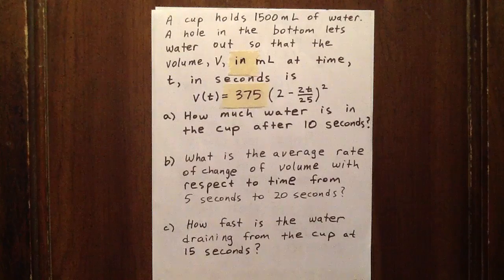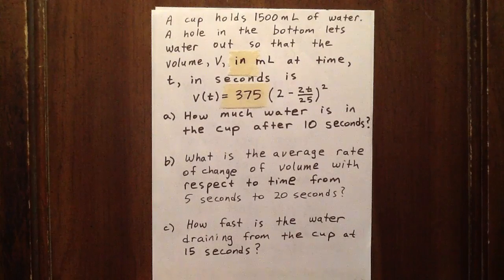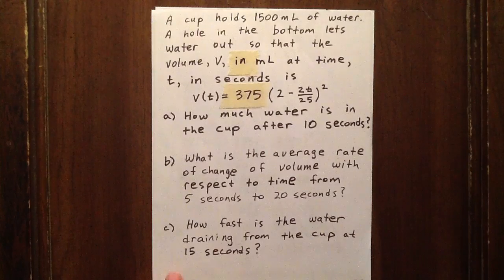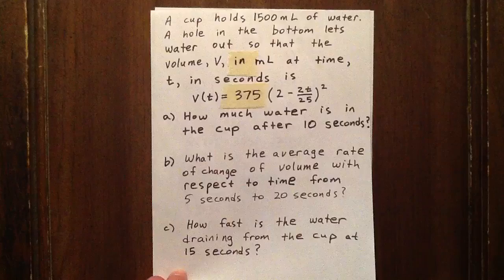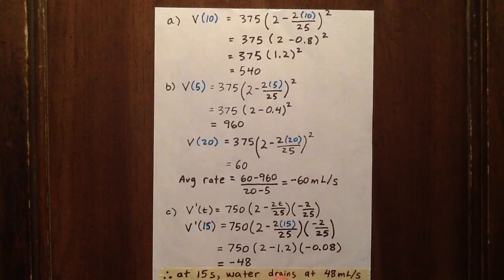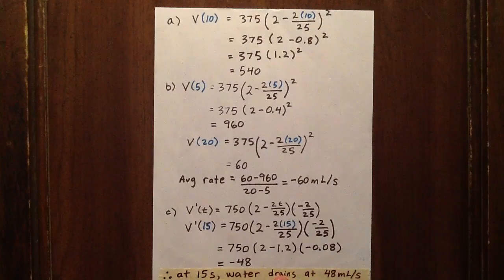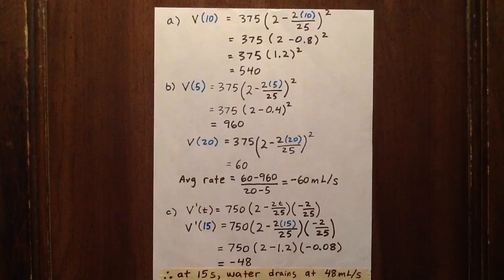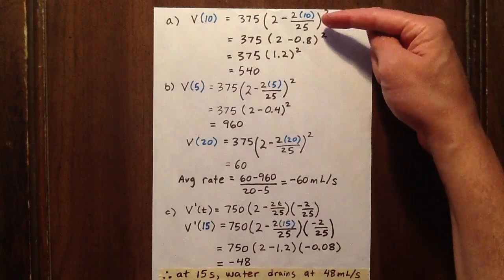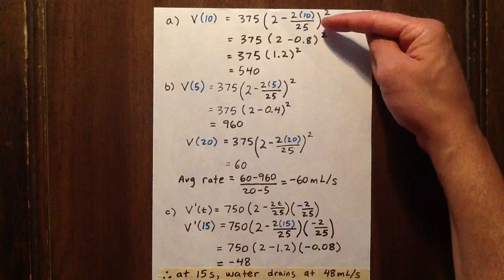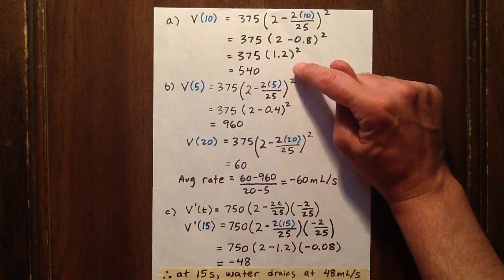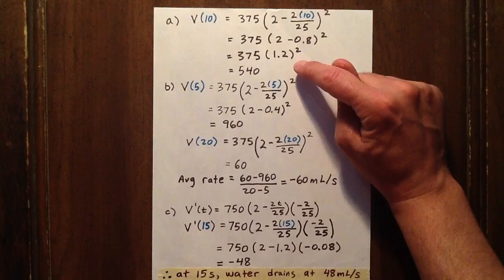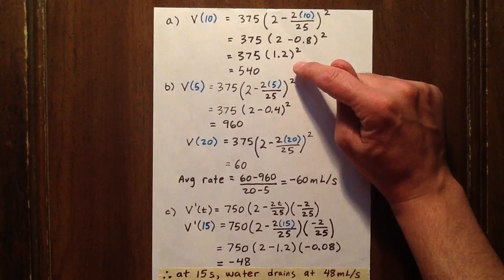In this word problem question, we're going to figure out the rate at which the volume of a cup is changing. The first question isn't too difficult. It wants to know how much water is left in the cup after 10 seconds, and that's just a matter of plugging in a value of 10 to the expression given. We see that after 10 seconds, there's 540 milliliters left in the cup.